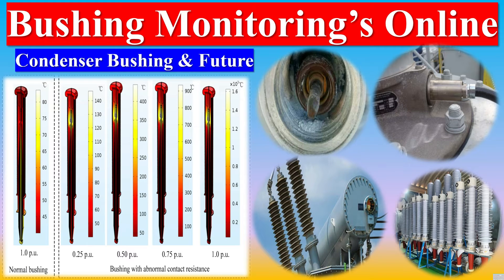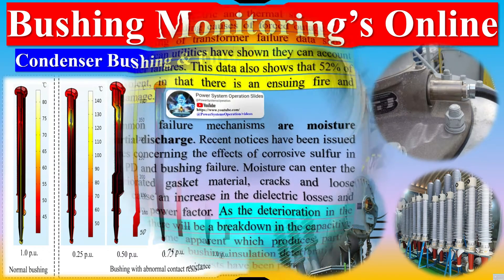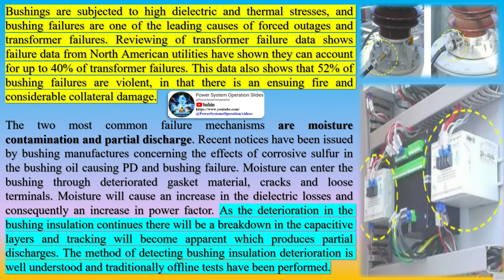Bushings are subjected to high dielectric and thermal stresses, and bushing failures are one of the leading causes of forced outages and transformer failures. Reviewing transformer failure data from North American utilities shows they can account for up to 40 percent of transformer failures. This data also shows that 52 percent of bushing failures are violent, with an ensuing fire and considerable collateral damage.